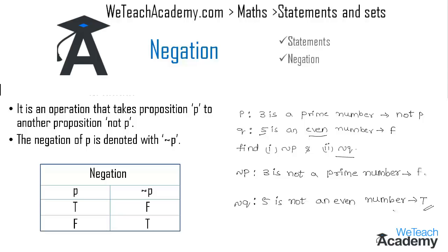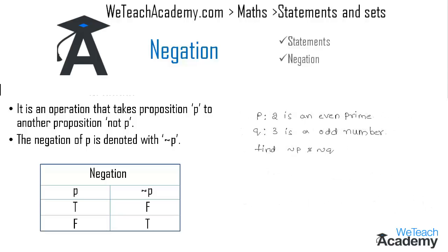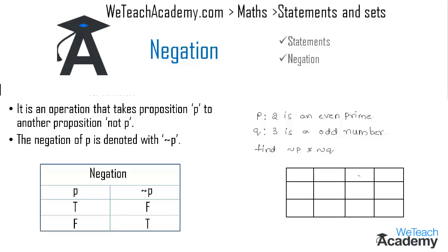Now let us solve another example. Here we have the statement p as '2 is an even number' and the statement q as '3 is an odd number'. We have to find the truth values for not p and not q. Let us draw a truth table and write the truth values for p and q, and also find not p and not q.